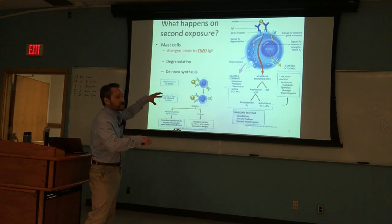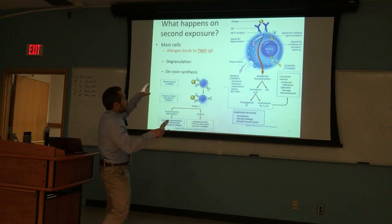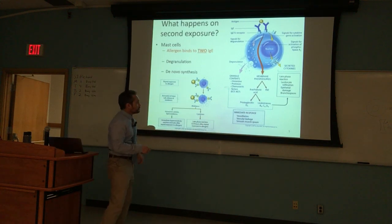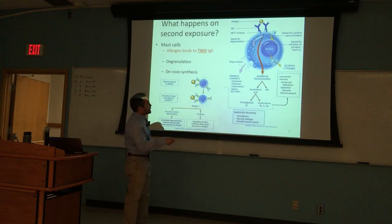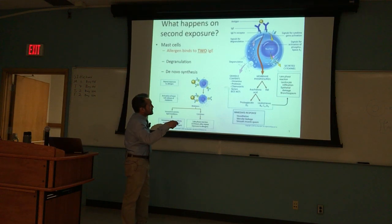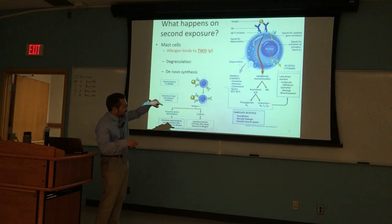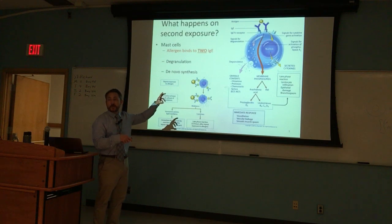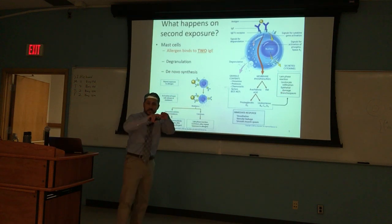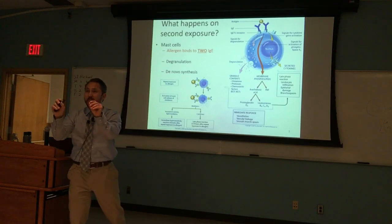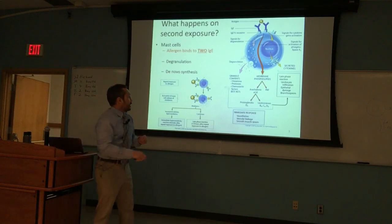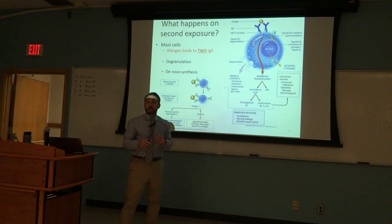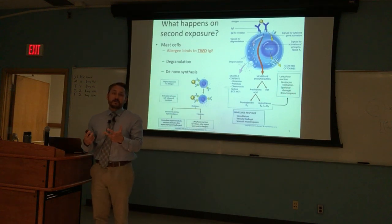This is the immediate response on the second exposure. In the late phase, leukotrienes funnel into a more delayed response versus prostaglandins, and you start manufacturing additional cytokines. Those cytokines facilitate additional leukocyte infiltration — those white blood cells, monocytes that become macrophages — and it causes epithelial damage and additional bronchospasm, like an allergy-asthma-induced response.